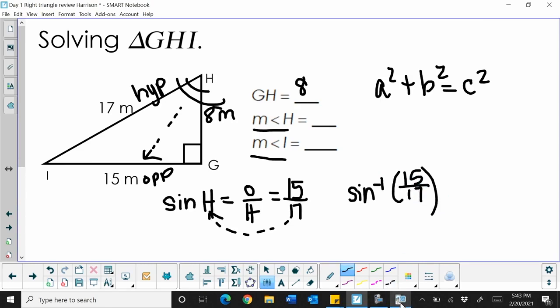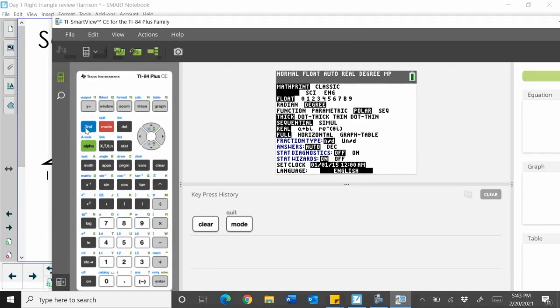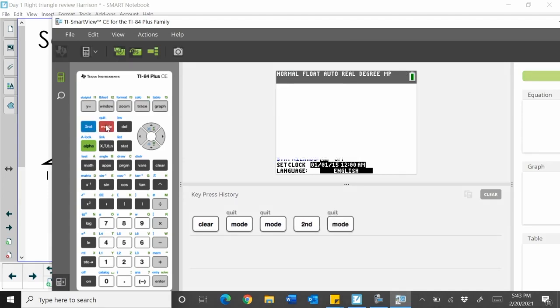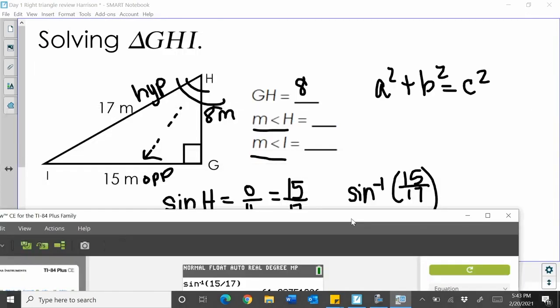So let's grab our calculators and crank through that. So we're going to take the inverse. Well, first, always make sure in your mode that you're in degrees, or if you want to be in radians, you can be in radians. But check for your unit of measure. Then I'm going to hit my second function button and sine, and that brings my inverse up of 15 divided by 17. And enter that, and that gives me the angle 61.9 degrees.